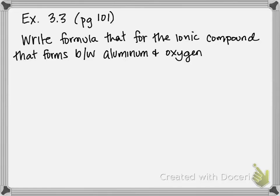This is example 3.3 on page 101 of our textbook. Here we're going to begin putting together what we've learned earlier in this chapter into writing formulas and naming compounds. Before we start worrying about naming, we're going to learn how to write formulas specifically for ionic compounds.